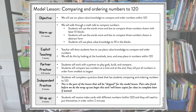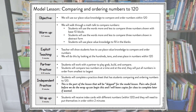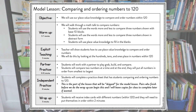The model lesson was on comparing and ordering numbers to 120. Our objective: we will use our place value knowledge to compare and order numbers within 120. For the warmup, we'd do a math talk — that's how I kick off all my math lessons, so I definitely wanted to start with that. Then we go into the I do, we do, you do part of the lesson: explicit teaching where the teacher shows students how to use place value knowledge to compare and order numbers, then a partner practice game, and then independent practice.